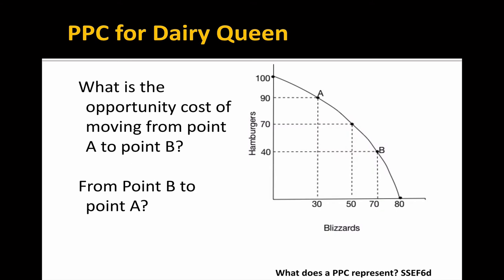Take a second and answer the point B to point A question. Here I am gaining hamburgers, but I'm giving up blizzards. So I moved from 70 blizzards to 30 blizzards. My answer for the second question would be 40 blizzards is my opportunity cost. If I'd asked what you gained, then you would have said 50 hamburgers.